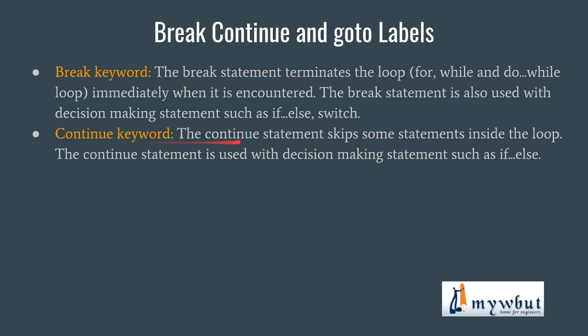Next we have the continue keyword. The continue statement skips some statements inside the loop. The continue statement is used with decision making statements such as if-else. Whenever a continue keyword is encountered, the code immediately after the continue statement inside a particular block is completely ignored. That means the part of code written inside a block after a continue keyword will not be executed. Instead, the jump will directly shift to the beginning of the loop. We shall see the functionality of every keyword separately in a program, and then things will get very clear.